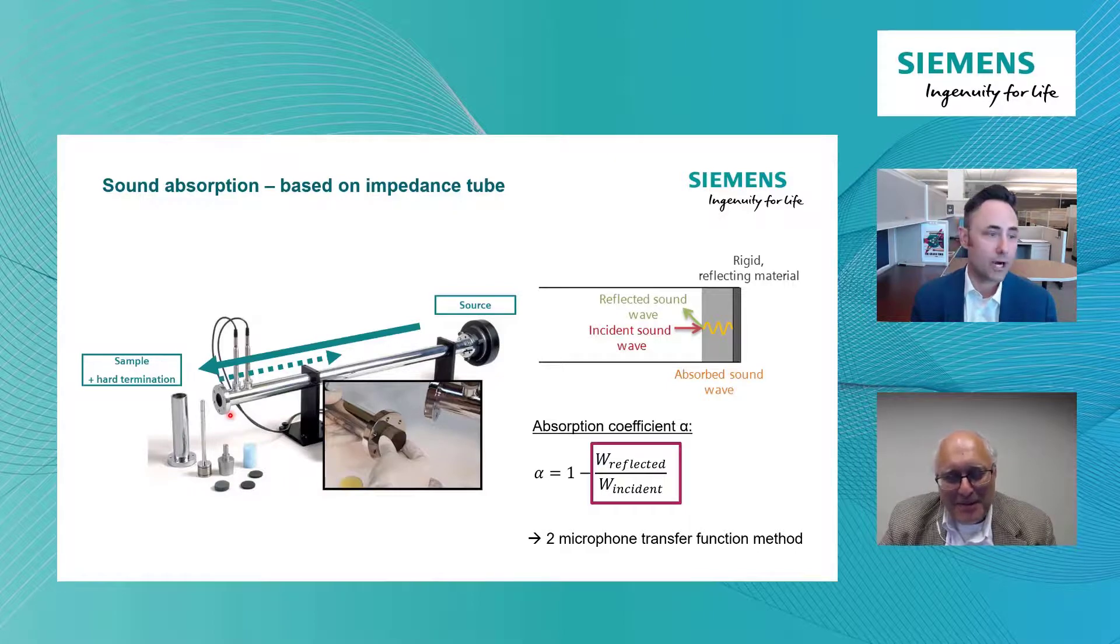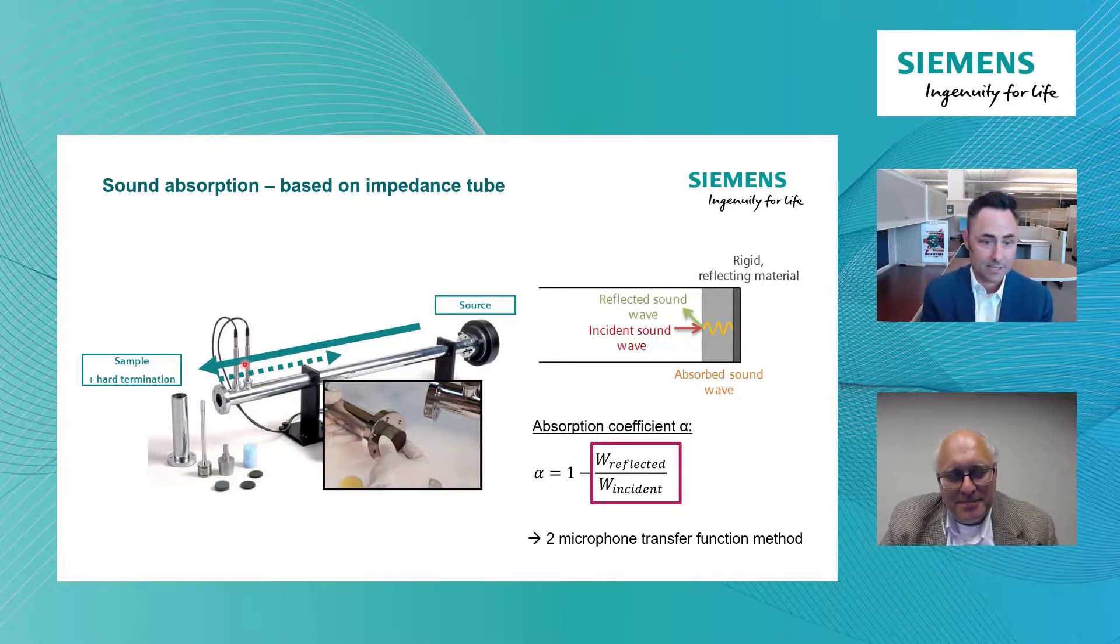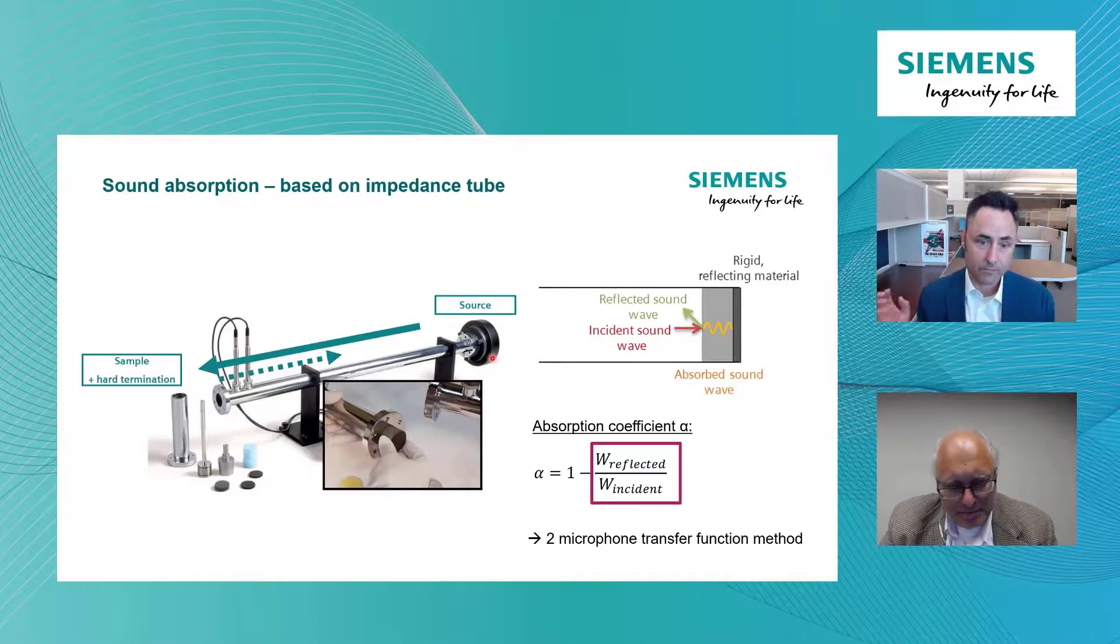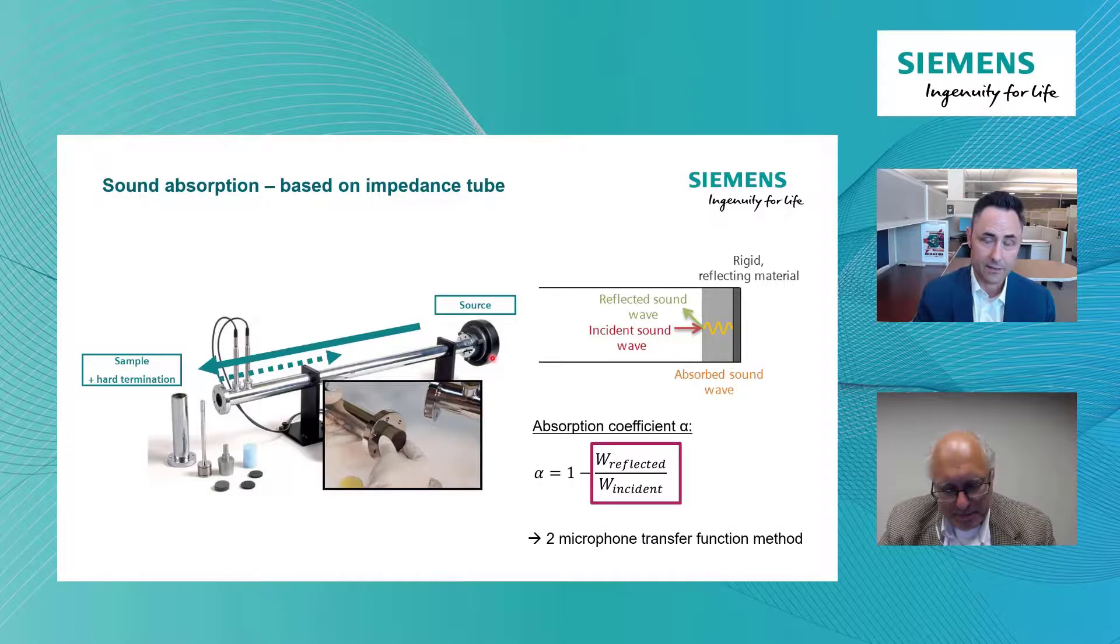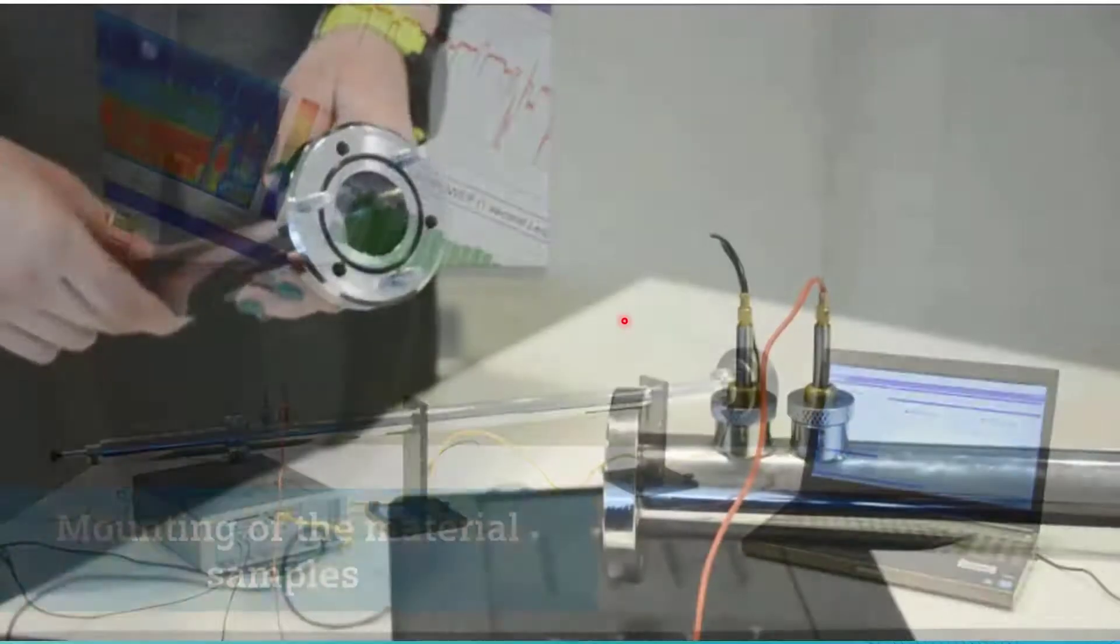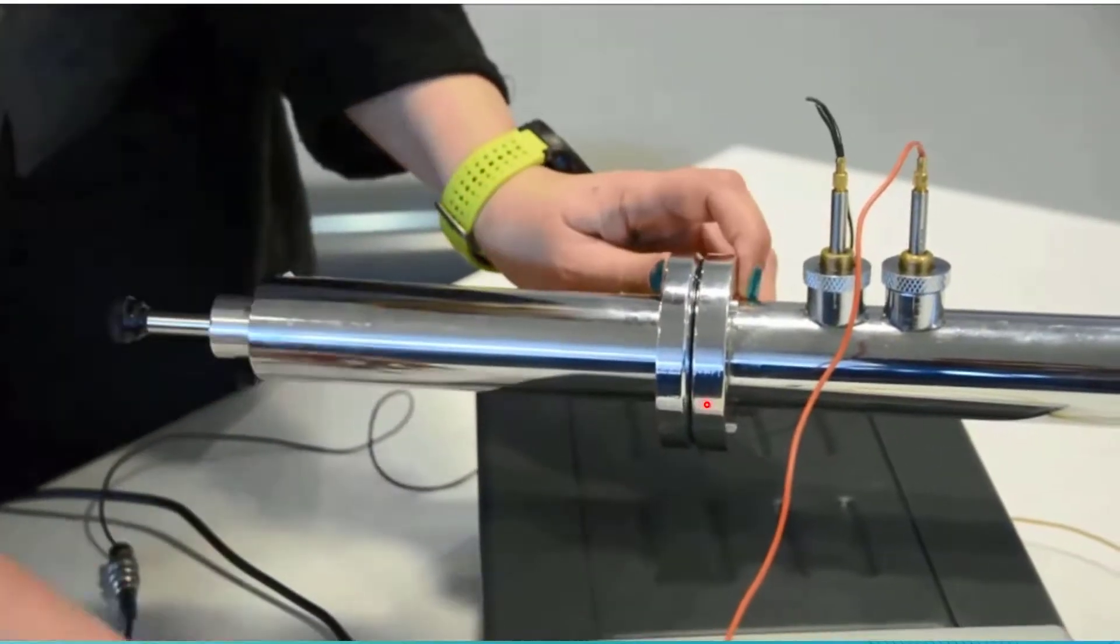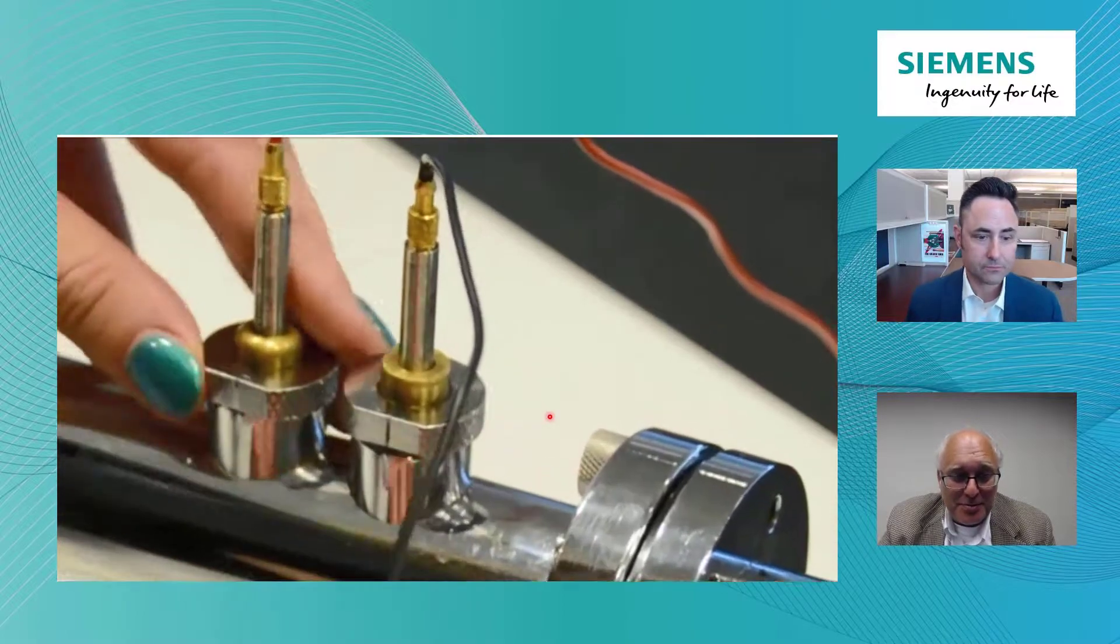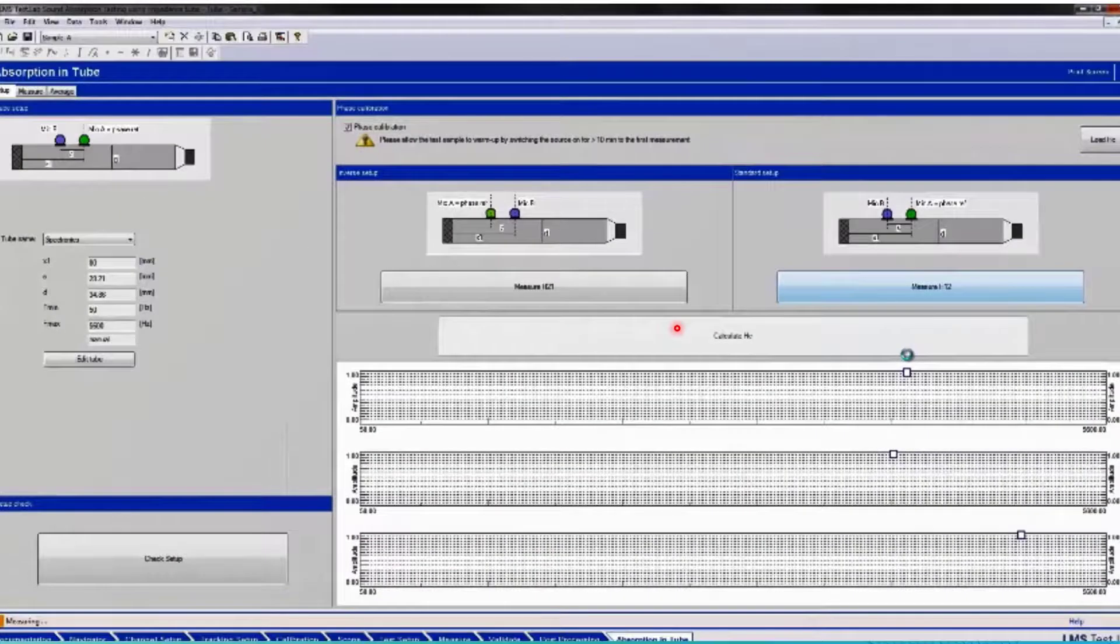This video will show you some of the highlights of this process. You see, there's the sample. It gets placed inside the tube, very specific location. We'll take a lot of care to cut this material sample very precisely so that all of the energy is being captured correctly inside the tube.